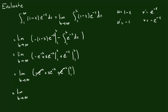So this is the limit as b approaches infinity. Putting b in gives us b times e to the negative b, and putting 1 in gives us 1 times e to the negative 1. Now we just need to evaluate the limit — the integral is completely done. When b approaches infinity, b goes to infinity while e to the negative b approaches 0, so we have an infinity times 0 indeterminate form, which suggests L'Hôpital's rule might be a good idea.